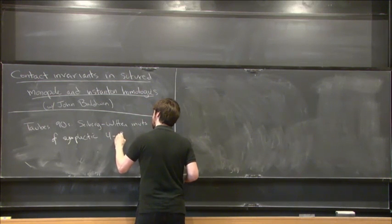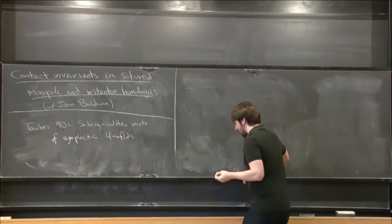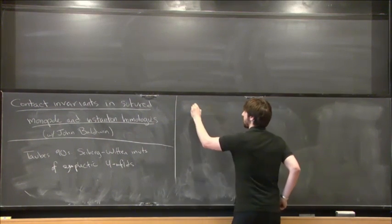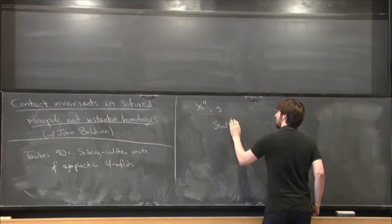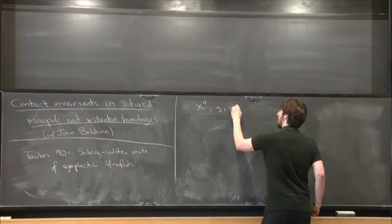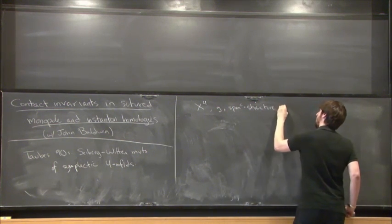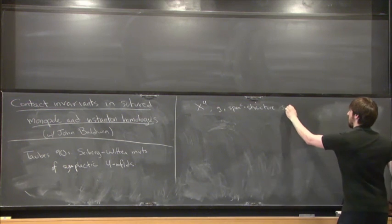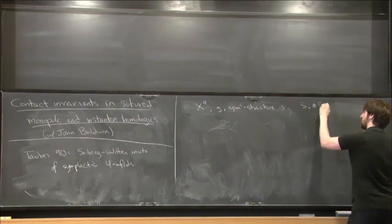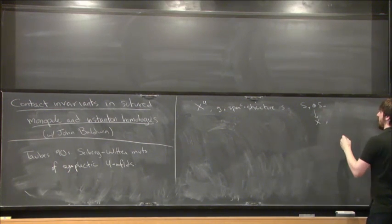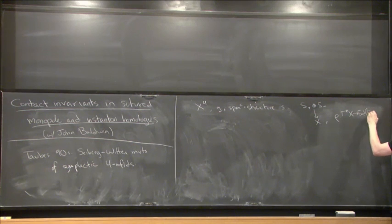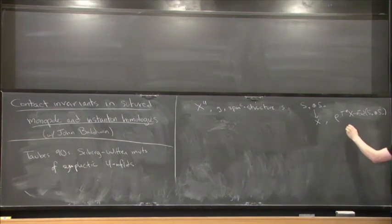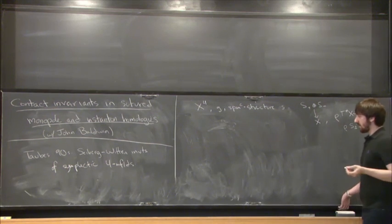This is for symplectic four-manifolds. What are the Seiberg-Witten equations? If we have a four-manifold X with a metric, it should be equipped with a spin-C structure S. That means we have a pair of rank-2 Hermitian vector bundles over X, with some notion of Clifford multiplication going from the cotangent bundle to the endomorphisms of S-plus and S-minus, interchanging the two summands.